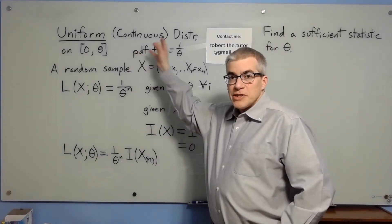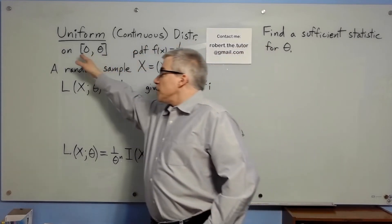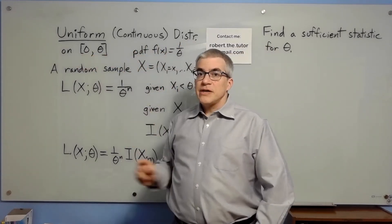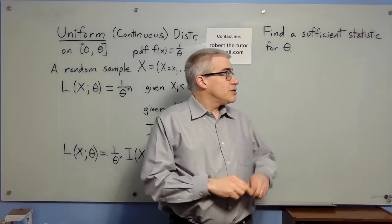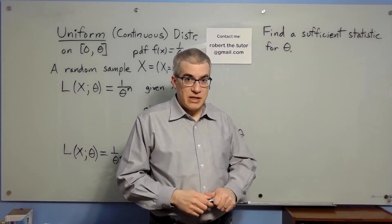Suppose we have a uniform continuous distribution on the interval from 0 to theta, where theta is an unknown parameter, and we would like to find a sufficient statistic for theta.